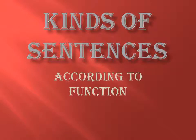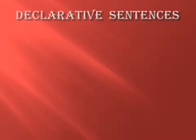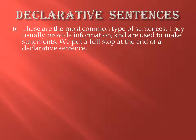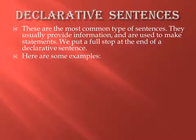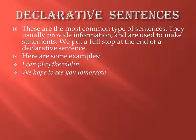So here comes the first one. The first one is declarative sentence. These are the most common type of sentences. They usually provide information and are used to make statements. We put a full stop at the end of a declarative sentence. Here are some examples: I can play the violin. We hope to see you tomorrow. She is studying English.